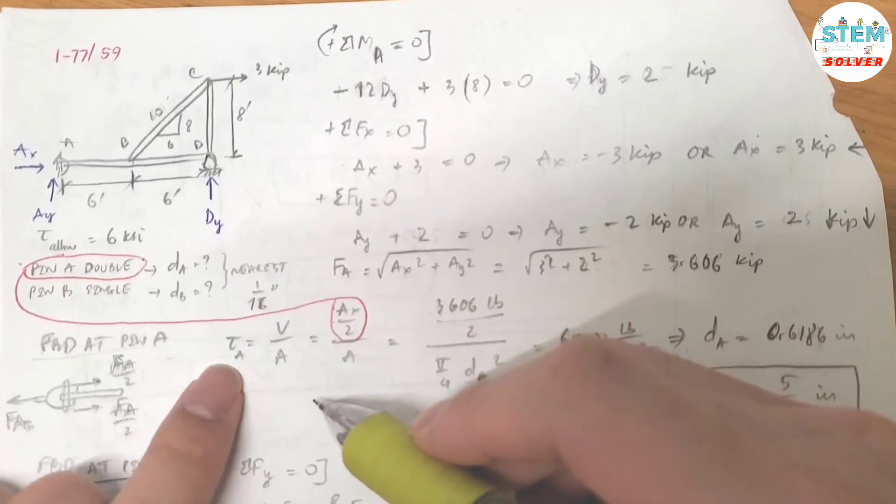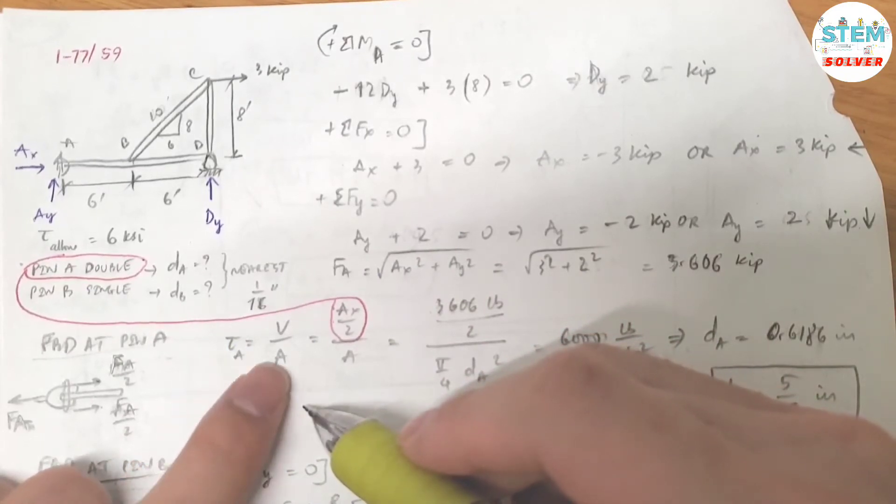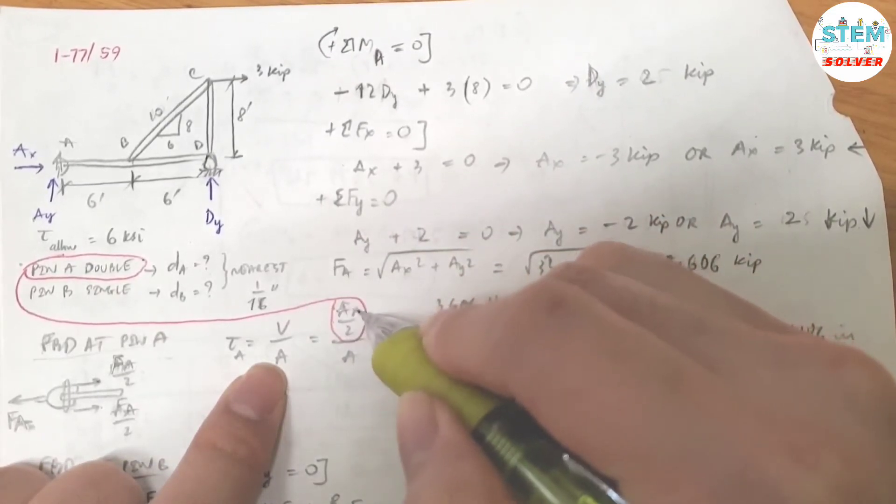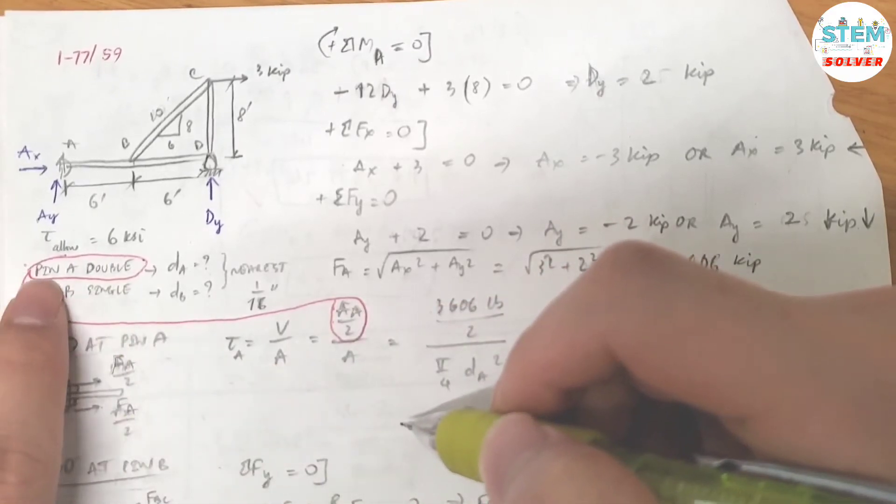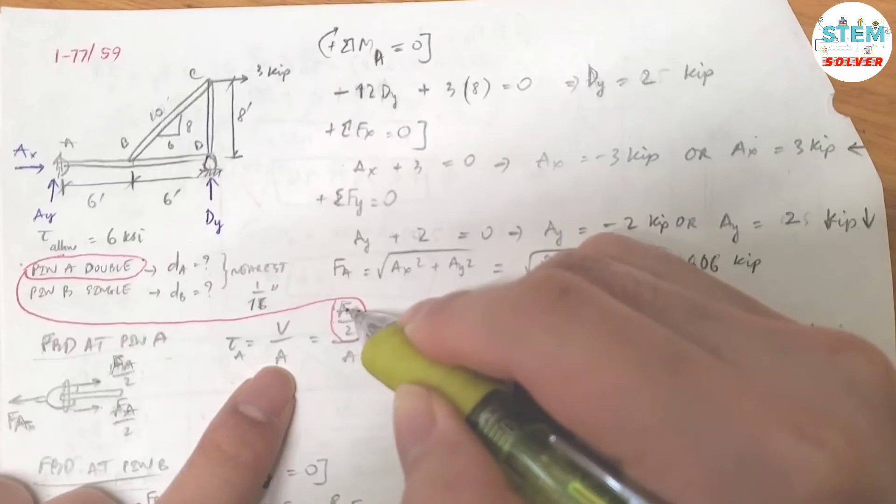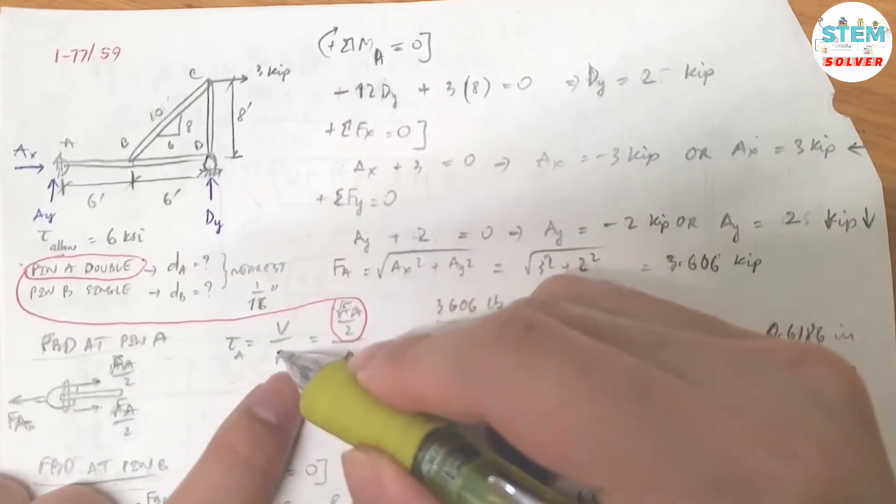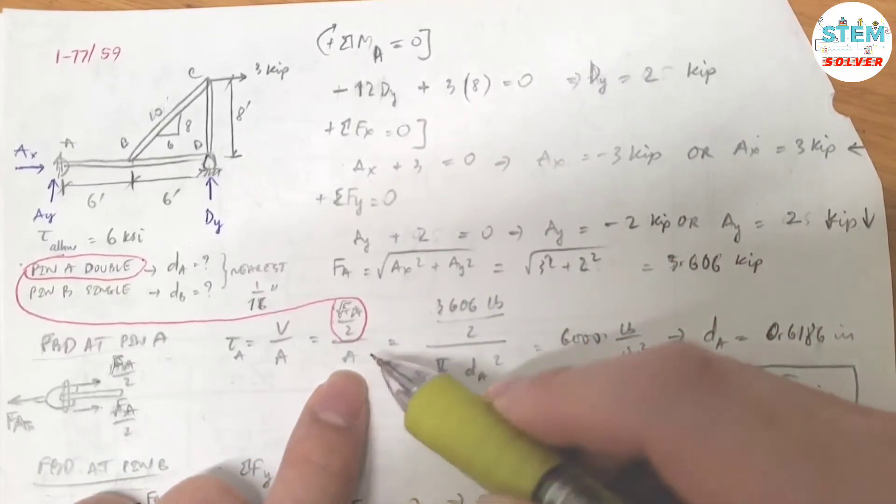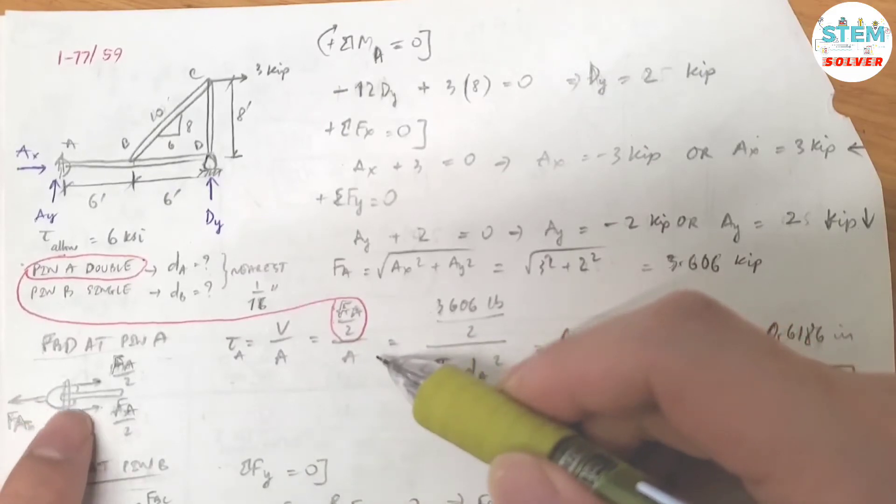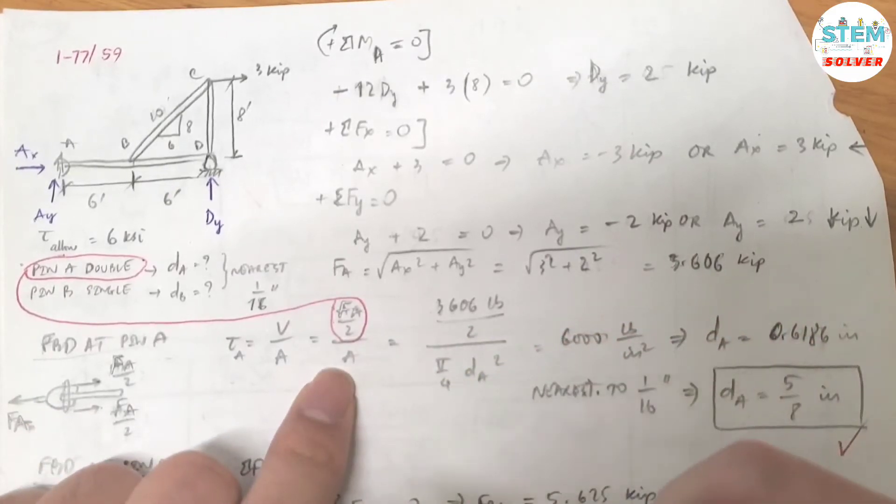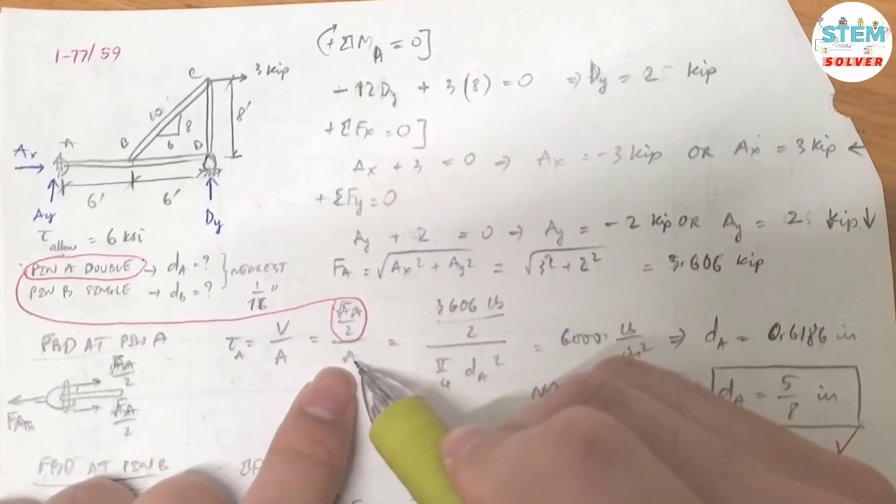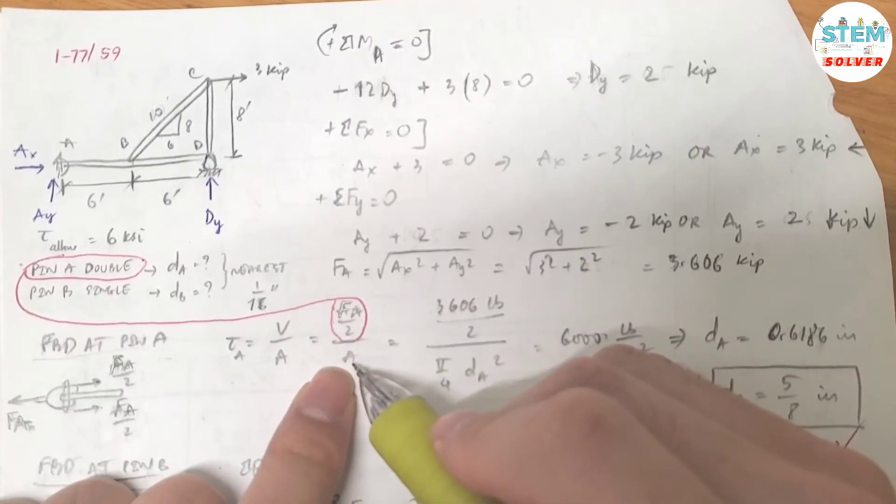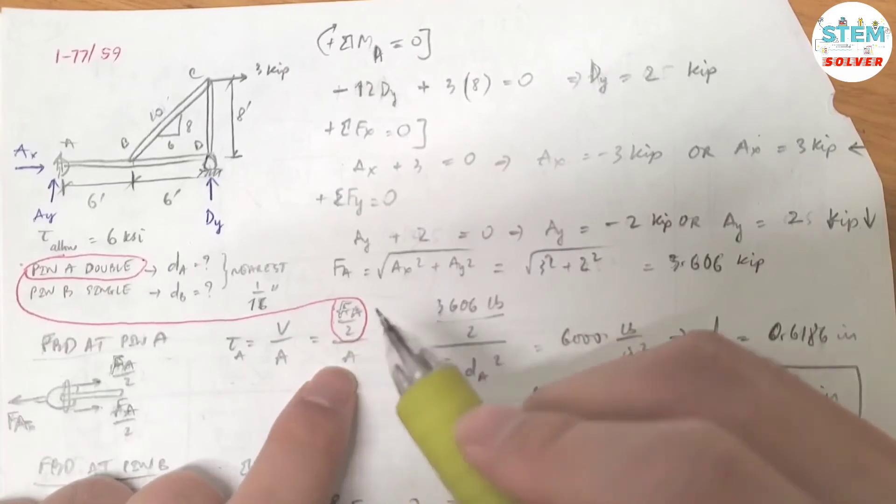So the force... we're back to the formula. We have shear stress equals the shear force divided by the area. The shear force in this case is equal to FA divided by 2 because you have double shear. So you have to divide by 2 to get the shear for each of the forces. And what is the area? The area is the area of this pin, and this area is what we are looking for. Keep in mind what you need to find so that you don't get lost.